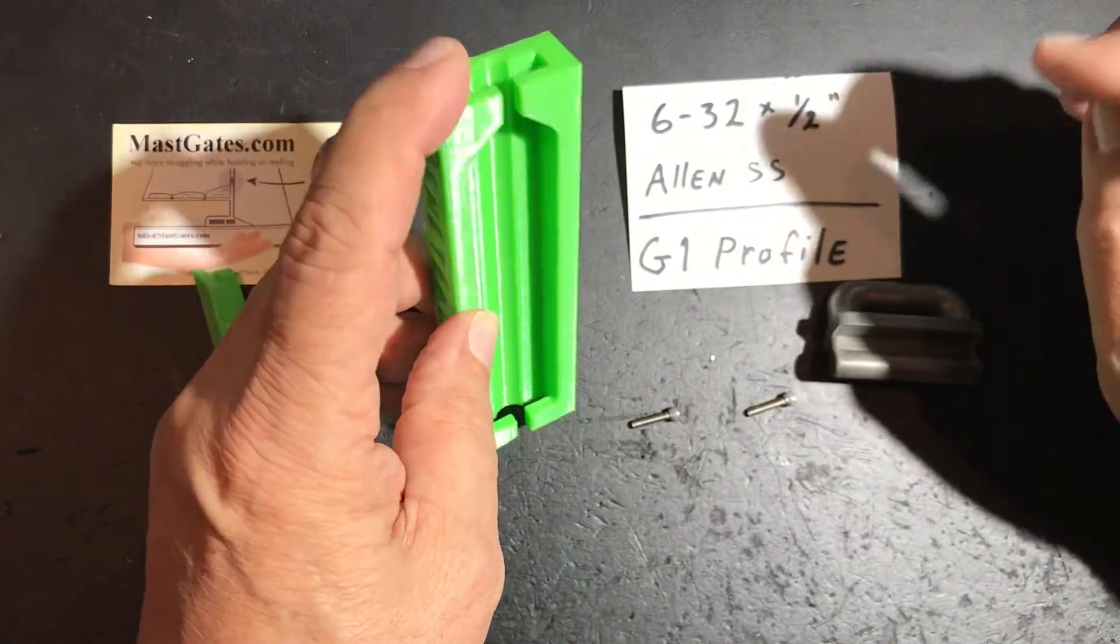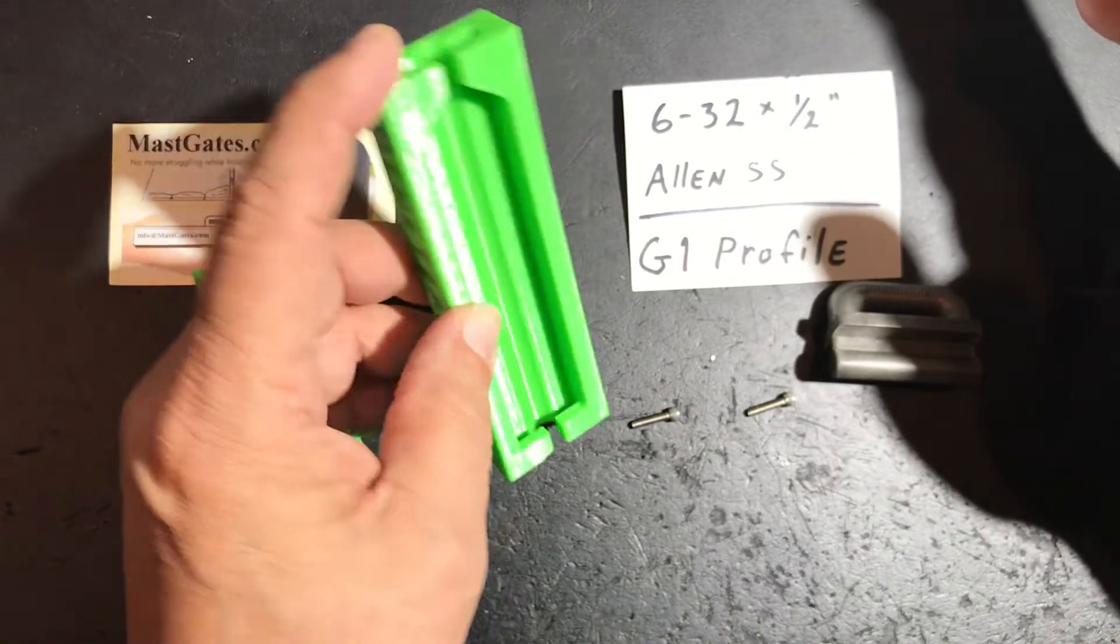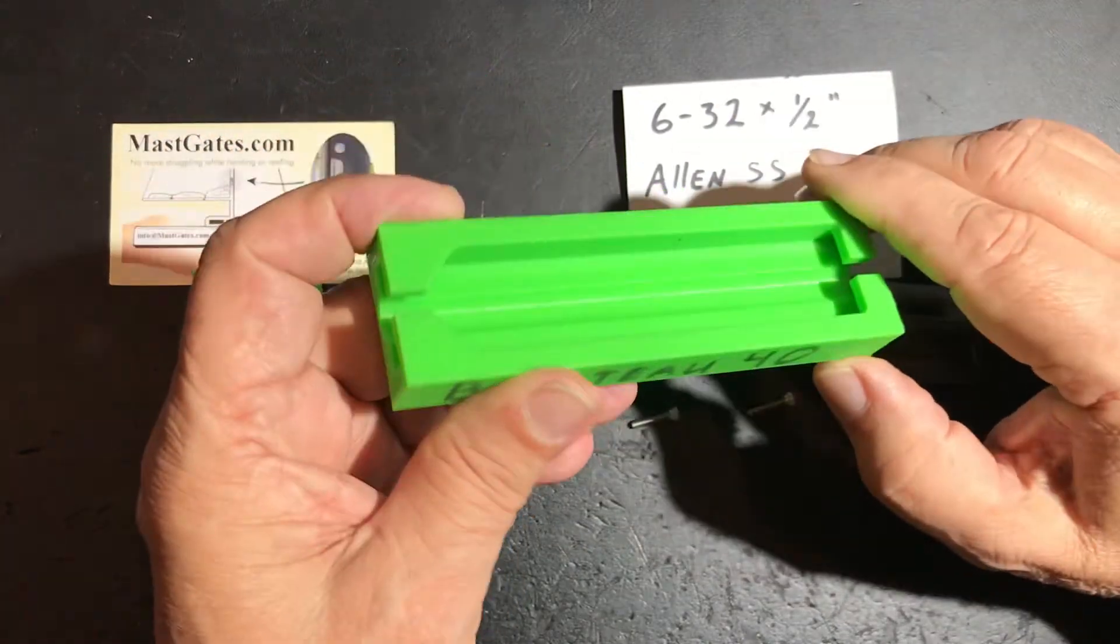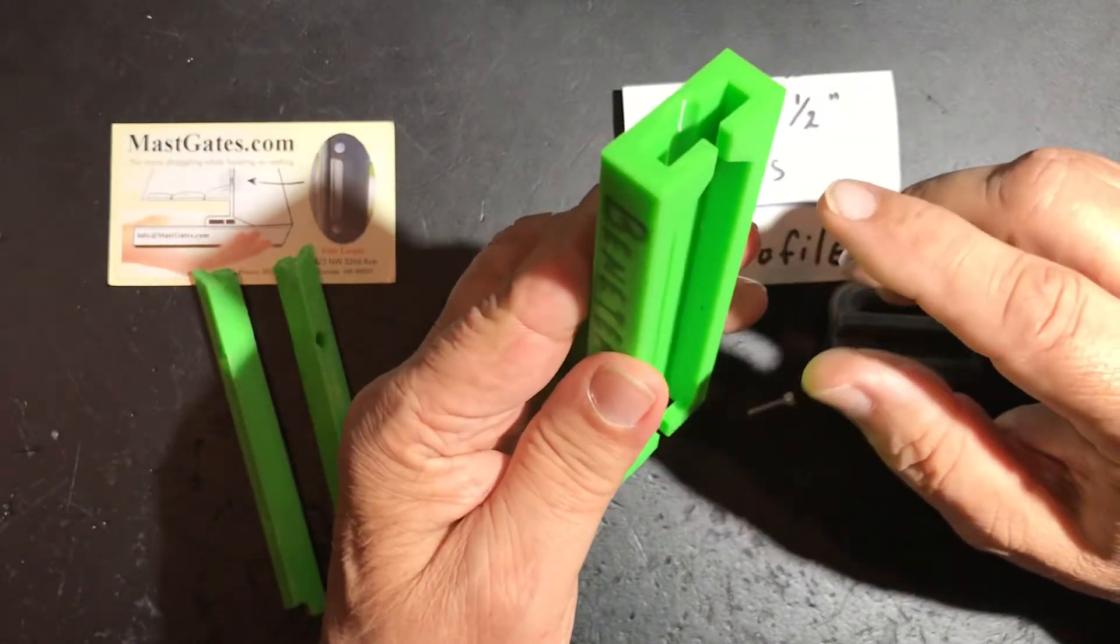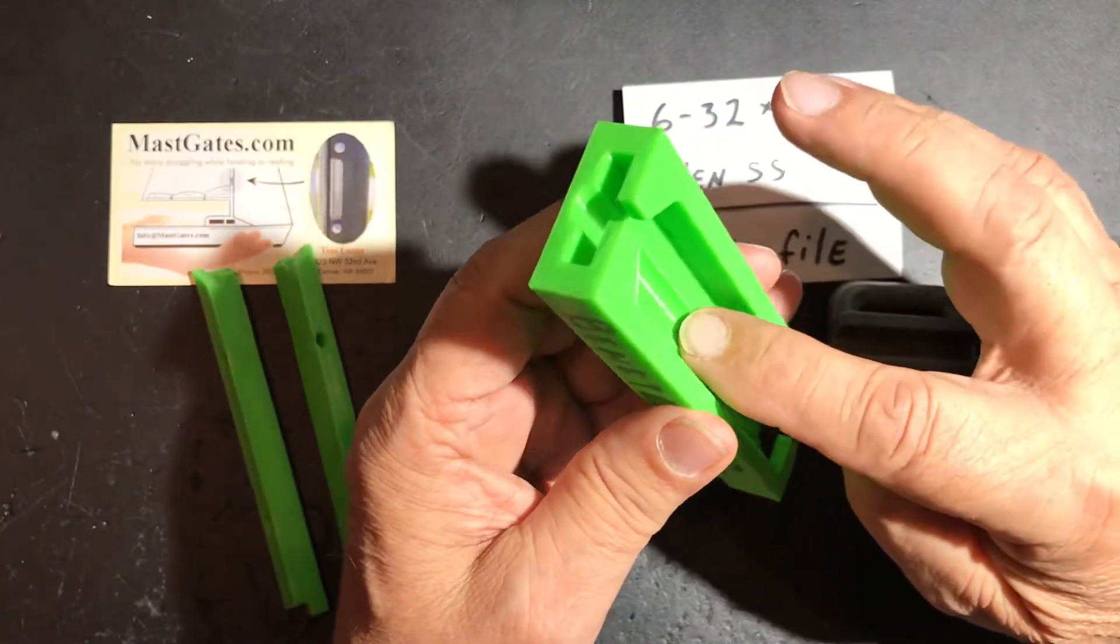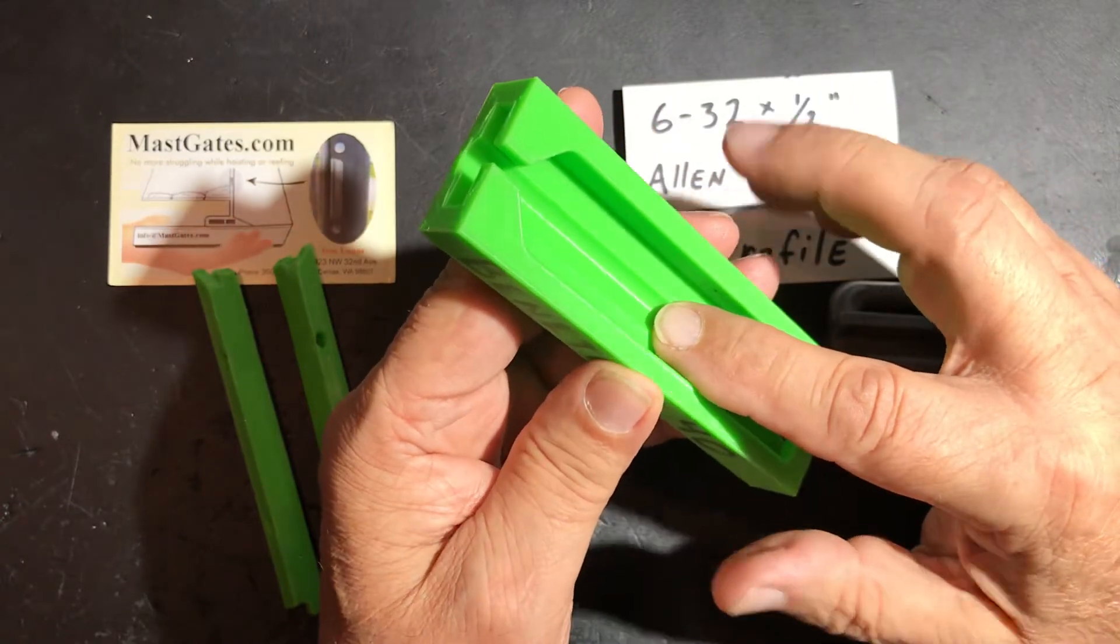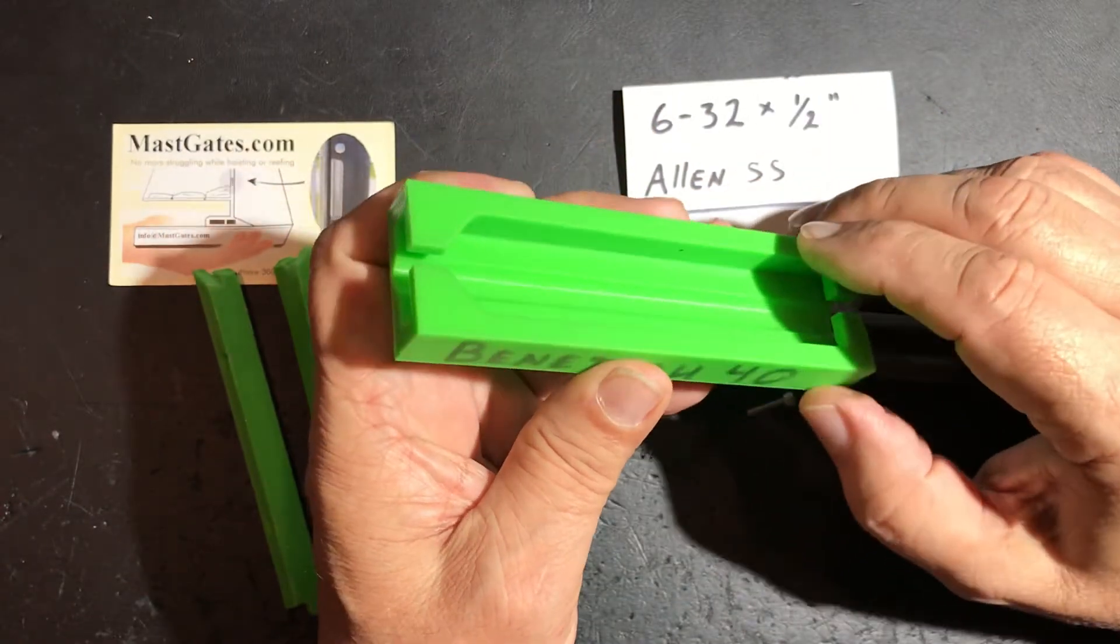All G1 profiles have different measurements depending on where the extrusion was done. Now this sailor wants to use it for a Rutgerson 1531-11 rolling car.